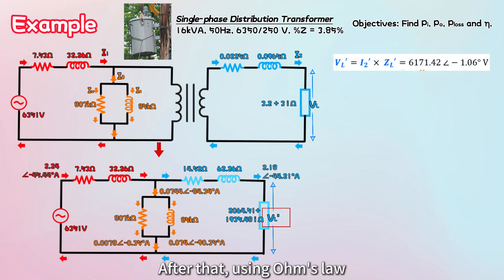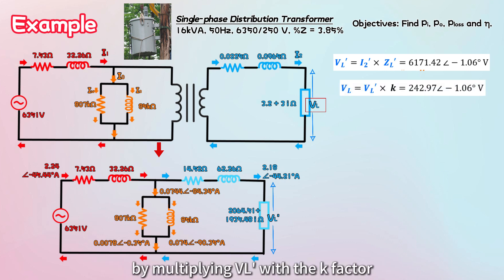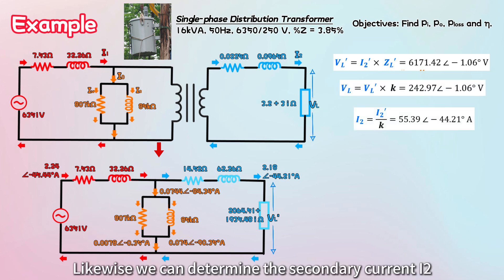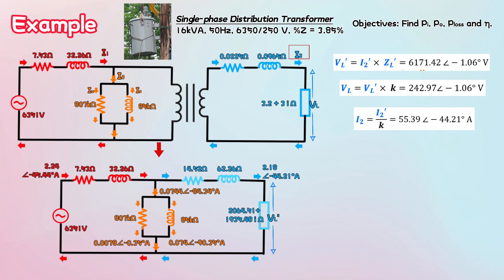After that, using Ohm's law, we can calculate the reflected load voltage VL', obtaining 6171.42 volts with a phase angle of minus 1.06 degrees. We can then find the actual load voltage VL by multiplying VL' with the k-factor. Likewise, we can determine the secondary current I2 by dividing I2' by the k-factor.